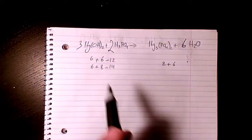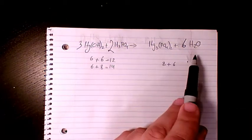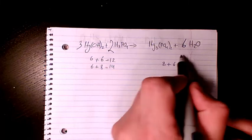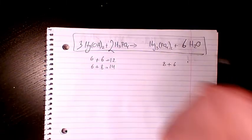So that's balanced: three, two, one, and six. That's how it's balanced and this is the final answer. I hope you enjoyed this video.